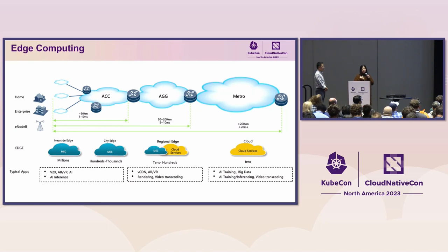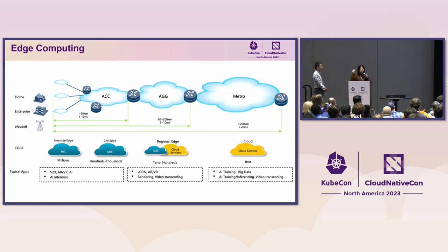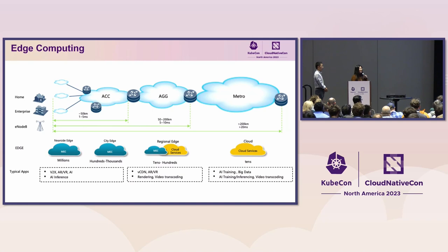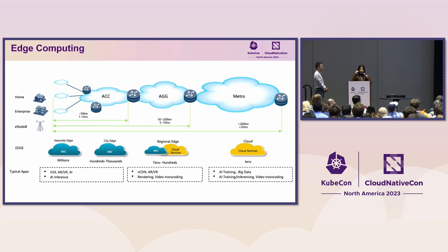As we delve into the concept of edge computing, let's visualize its ecosystem. Edge computing brings computation and data storage closer to the sources of data. This proximity can yield numerous benefits, including significant reduction in latency and bandwidth use. Here is a breakdown of the edge computing layers illustrated in the diagram. Near-side edge — we call it MAC. This is the closest edge layer to the end user, located at home, enterprise, or node-based levels. At this layer, we are operating on the scale of millions of devices, with latency as low as 5 milliseconds, suitable for immediate response applications like V2X, AR/VR, and AI inference.